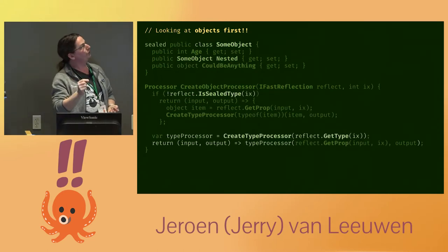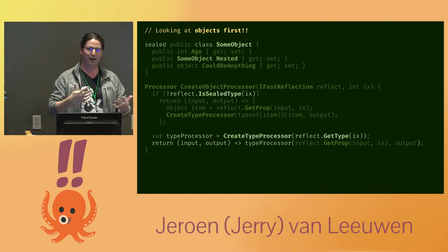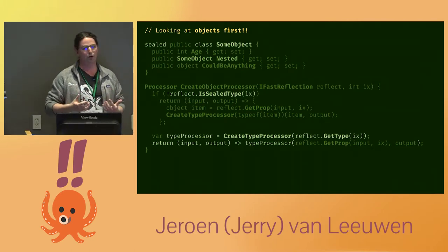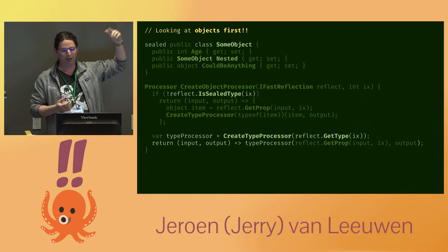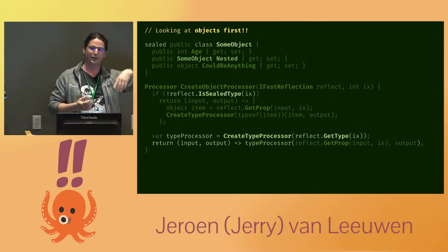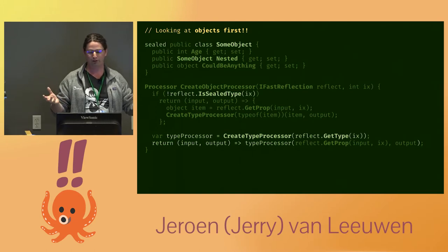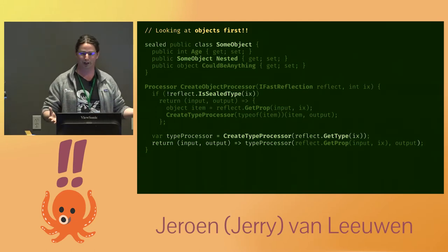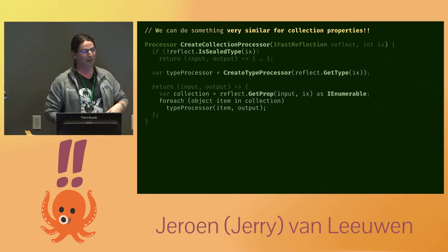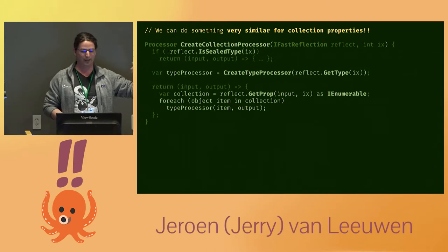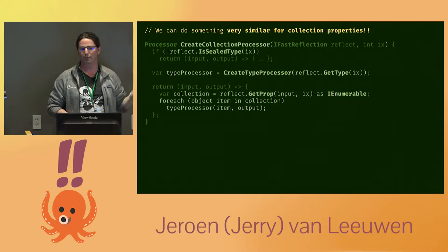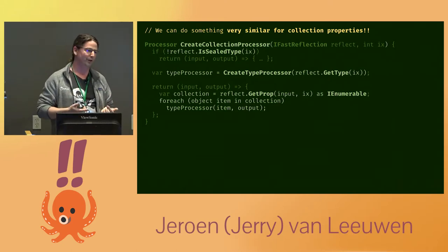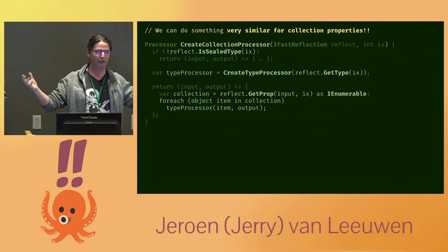Even more interesting is the sealed concept in .NET — making a type uninheritable. At that point, what I know about the nested property is it's always going to be that specific type; it can't be anything else. So I can exploit that: do the type processor lookup once and return a delegate that just invokes it on whatever is in the property. Now I'm not even doing the type lookup anymore. Similarly for collections: if I have a collection of a fixed type, I can get the type processor outside the loop and run it over all elements with wild abandon. At that point, I basically have no decisions left during serialization — every decision gets made exactly once, and the rest of execution is just as fast as it can be.